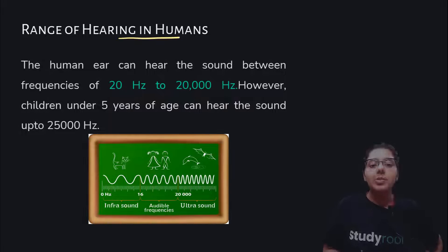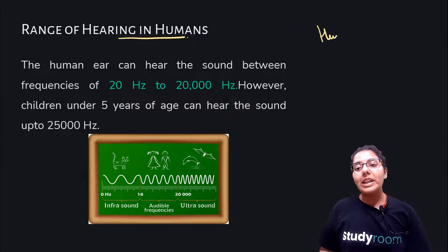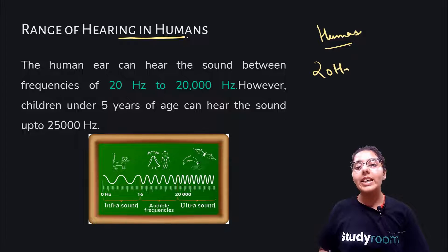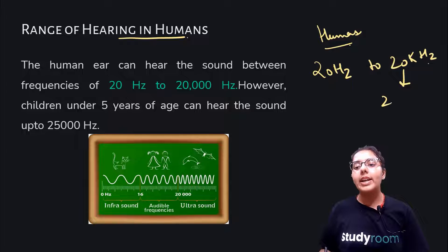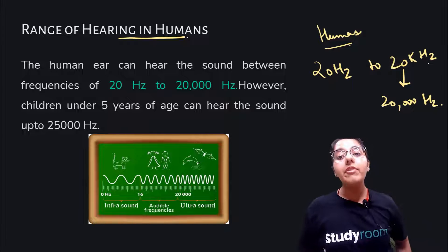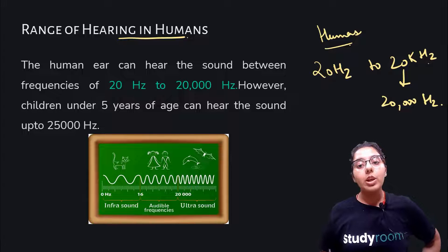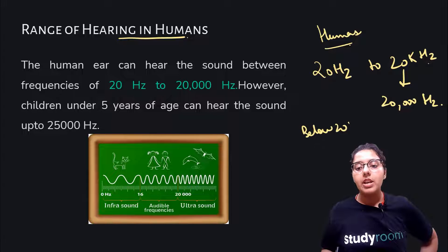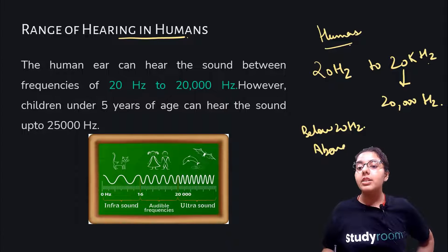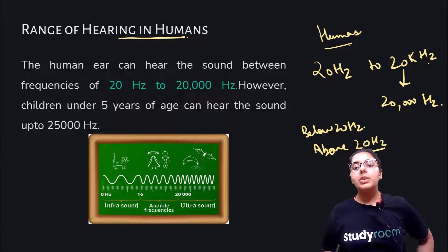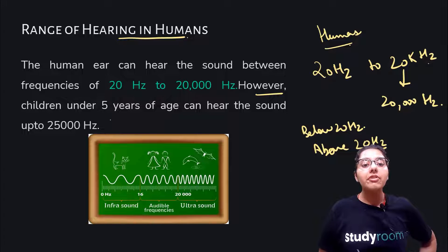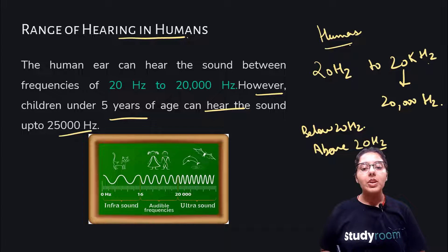Range of hearing in humans: humans can hear from 20 hertz to 20 kilohertz, and 20 kilohertz equals 20,000 hertz. If there is a sound below 20 hertz, humans cannot hear it. If there is a sound above 20 kilohertz, humans cannot hear that either. However, children up to 5 years of age can hear sounds up to 25,000 hertz. As we grow up, we can only hear from 20 hertz to 20 kilohertz.